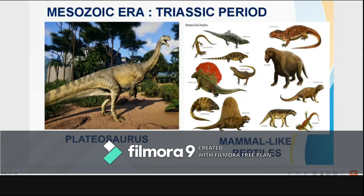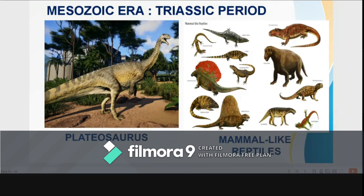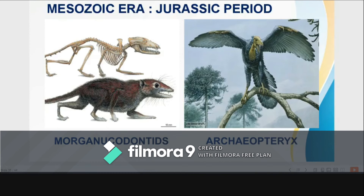The first period of the Mesozoic era is the Triassic. It is characterized by highlands, many deserts, extensive seas, tropical and subtropical warm climates, abundant gymnosperms, appearance of seed ferns, the first dinosaurs — the Plateosaurus — swimming and mammal-like reptiles, and a decrease in number of marine invertebrates.